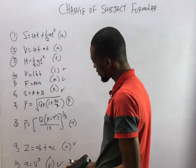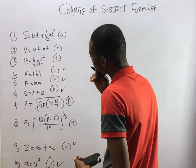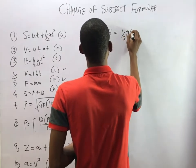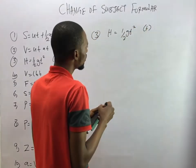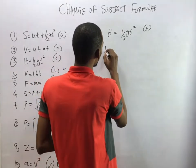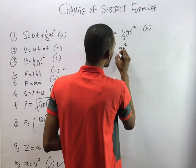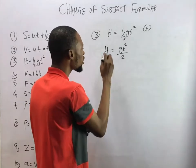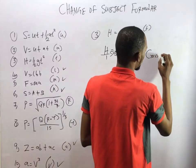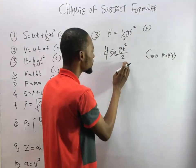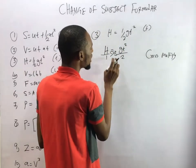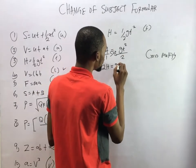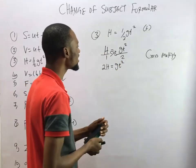Question 3 says H equals half G T squared and we need T as the subject formula. This is the same as H equals GT squared over 2. Treating the 2 as over 1, we cross multiply: H times 2 gives 2H, and 1 times GT squared gives GT squared. So 2H equals GT squared.